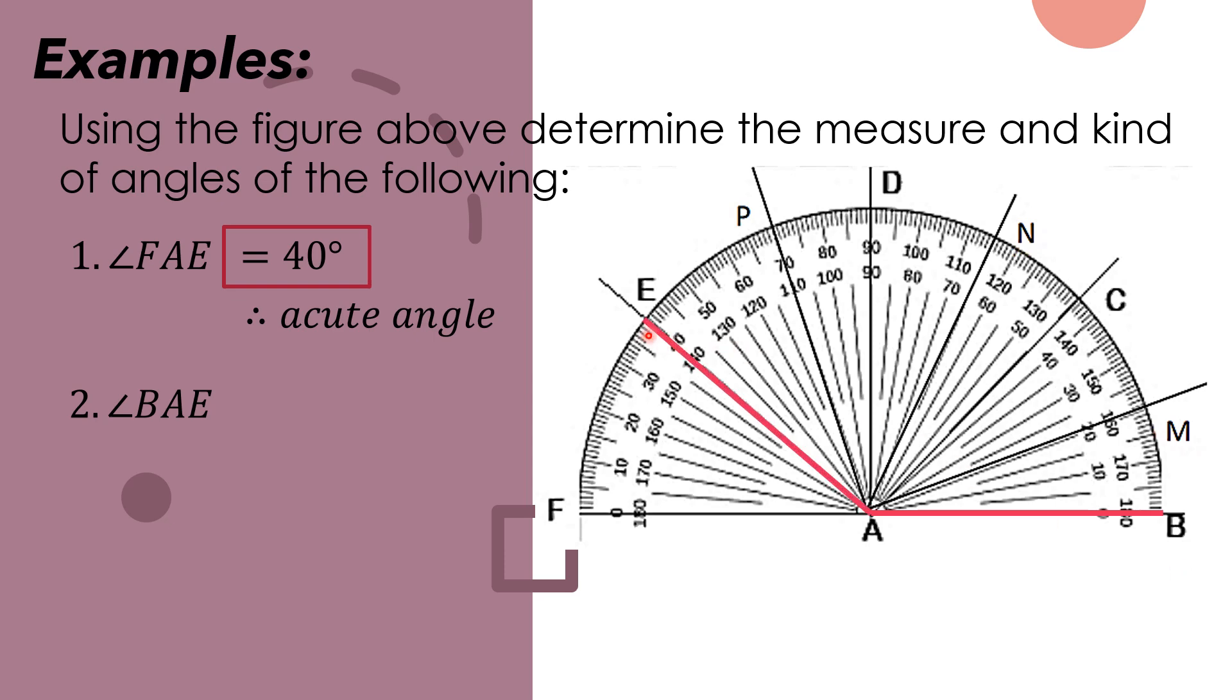It lies on AE. So using the inner scale, starting from zero on the right going here, angle BAE lies on 140. Therefore, angle BAE is equal to 140 degrees. And since 140 is greater than 90, it is an example of obtuse angle.